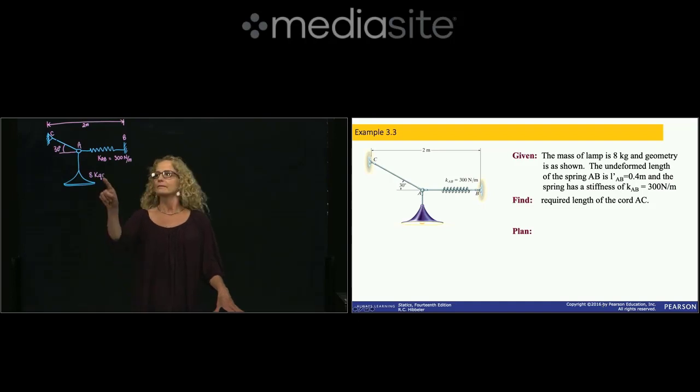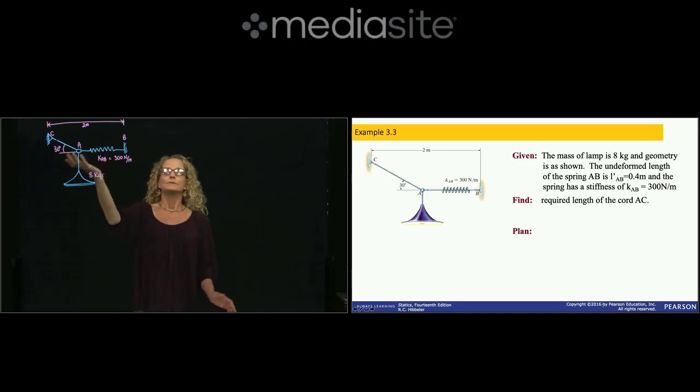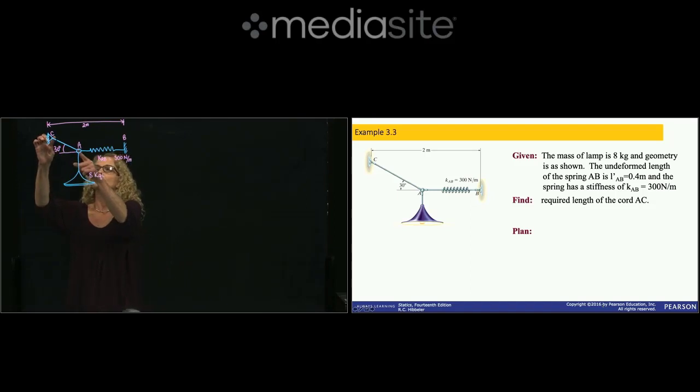In this problem, the mass of the lamp is 8 kilograms. As you see in the geometry, this lamp is held by a tension of this cord and by a spring which creates also a force. And they are asking us to find the required length of this cord to hold the lamp in equilibrium.